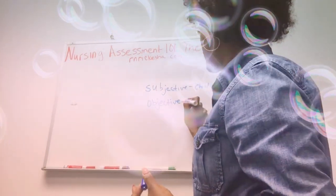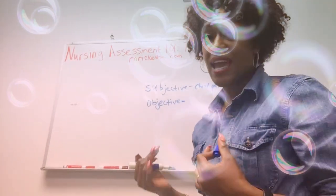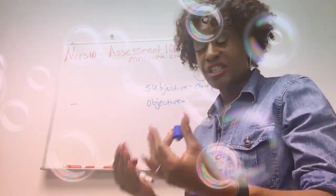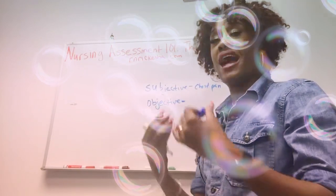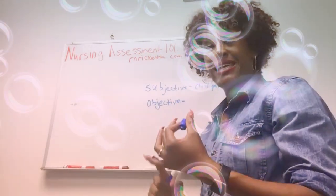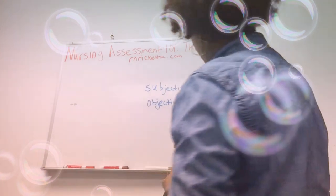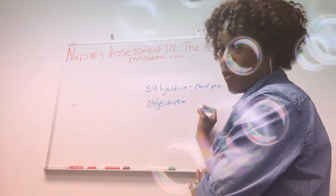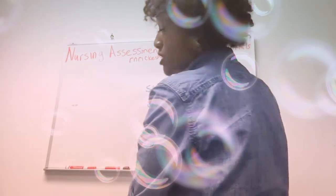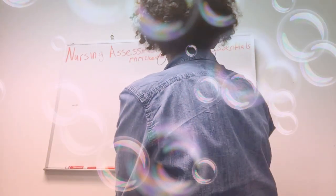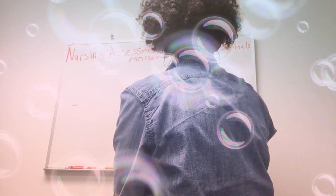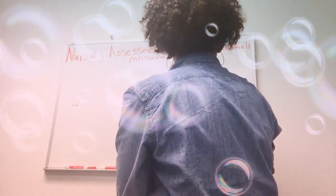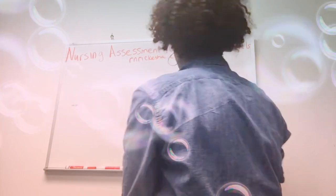Objective data is stuff that we see as the observer, as the nurse, as the clinician. Objectives are like an object — we can see it, touch it, smell it. For example, the patient would say they have chest pain, while we could say that they were sweating. How about they're sweating and they're also cold to touch? There's something really wrong when they're sweating and cold to touch.